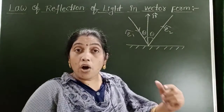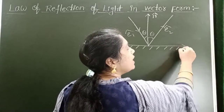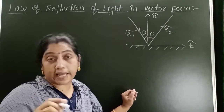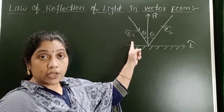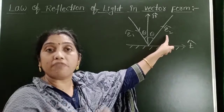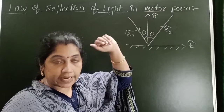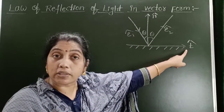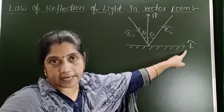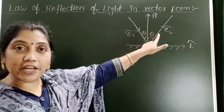Along the reflecting surface — that means along the tangential direction — take another unit vector T cap, where T cap is the unit vector along the tangential direction. E1 cap is the unit vector along the incident light ray, E2 cap is the unit vector along the reflected ray, N cap is the unit vector along the normal in the upward direction, and T cap is the unit vector along the reflecting surface.